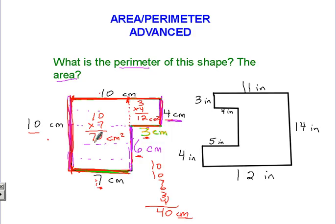Then all I have to do is put these two together. 70 plus 12 is 82. Don't forget area is square centimeters. Let's take a look at another one that's even harder.